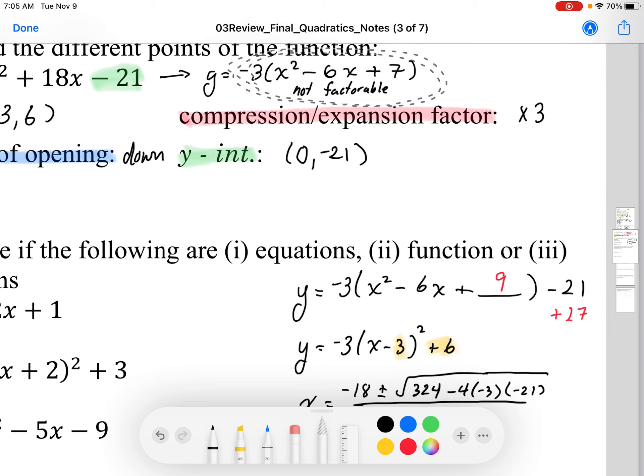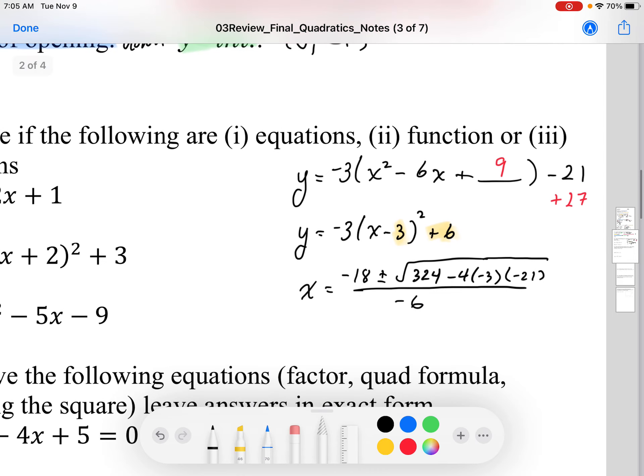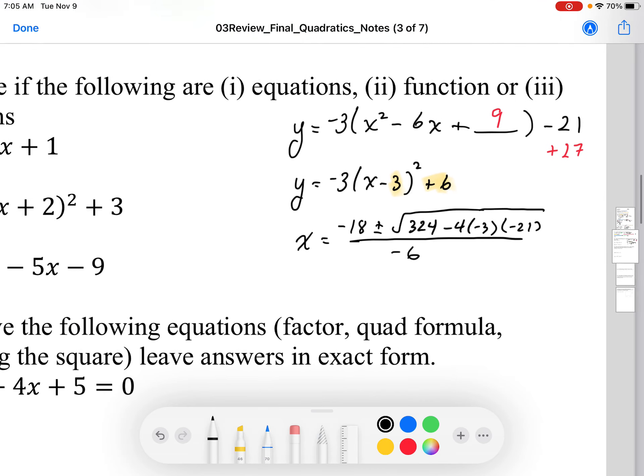We could have just put a is 1, b is -6, and c is positive 7. Okay, so if you recognize that, you might want to use smaller numbers, but we don't have to. We can just use the numbers that were given initially.